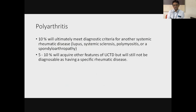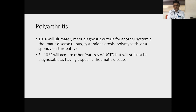What happens to these patients? Ten percent of patients who present with polyarthritis not fulfilling criteria for rheumatoid or any other CTD ultimately develop — down the years, about three to five years — a systemic rheumatic disease, whether lupus, systemic sclerosis, inflammatory myositis, or spondyloarthritis. Another five to ten percent may acquire other features of connective tissue disease like Raynaud's, skin manifestations, or lung manifestations, but still cannot be labeled as a specific rheumatic disease. This group is labeled as UCTD.